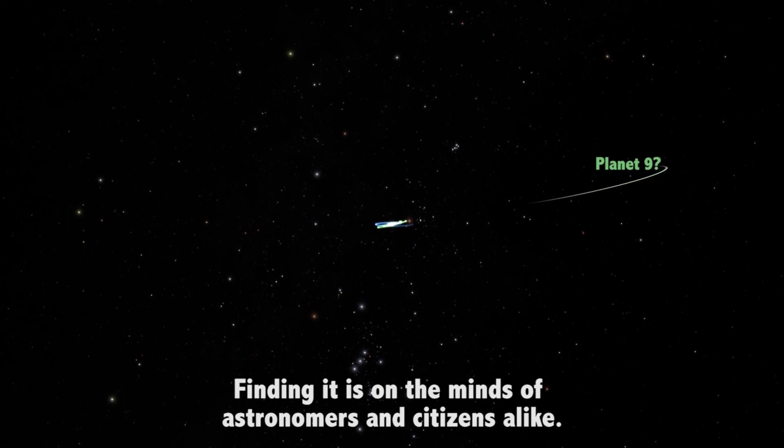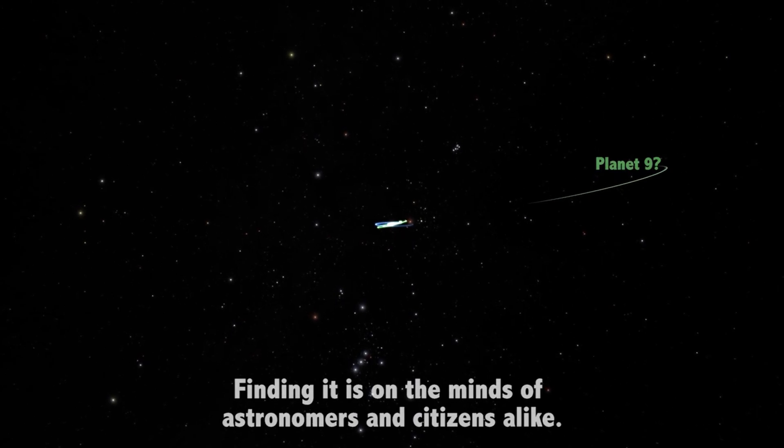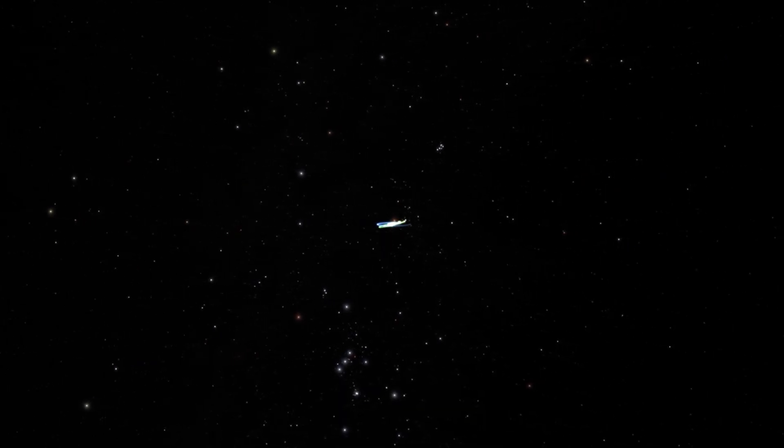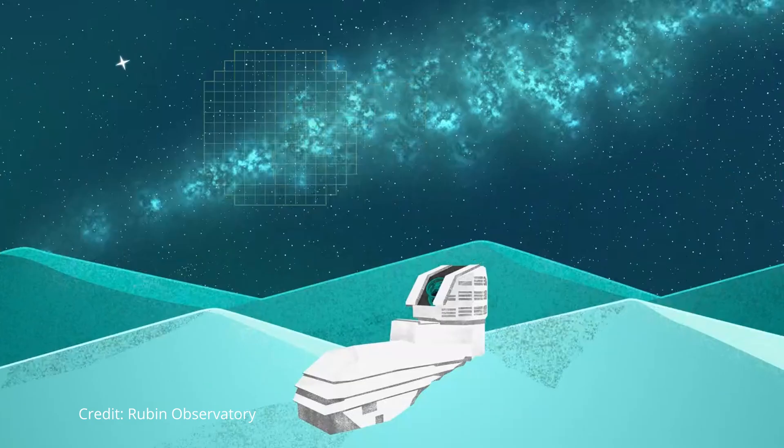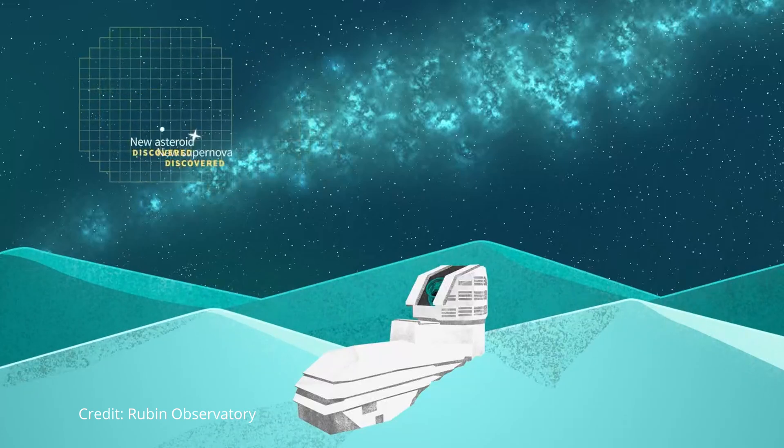If Planet 9 exists, it's likely very far from the Sun, making it difficult to detect with existing telescopes. But the Rubin Observatory, with its massive field of view and ability to track faint, distant objects, might finally give us the clues we need.